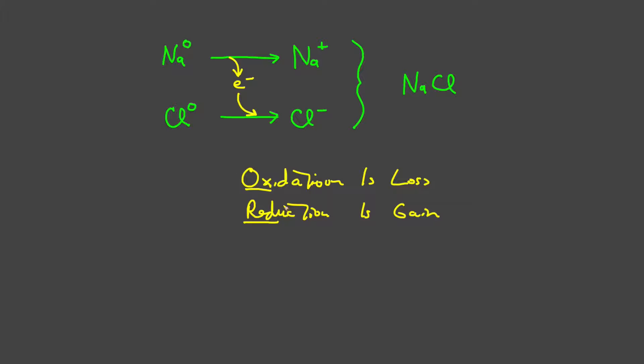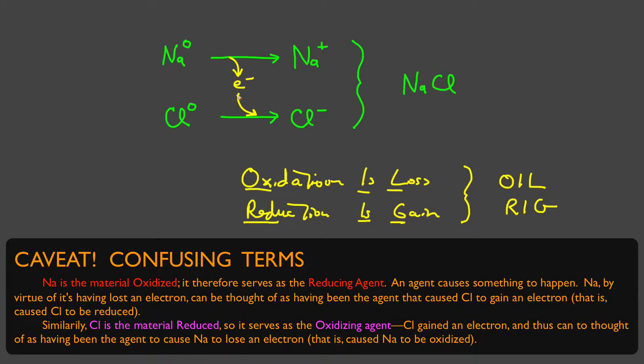That suggests the question of interest: which of these species was oxidized and which was reduced? Before I answer that, let me say that these few words give rise to one of my favorite acronyms: oxidation is loss, reduction is gain. Oil rig. Returning to our diagram now, sodium lost an electron, and therefore it is what was oxidized, and chlorine gained an electron, and it is the chemical species that was reduced.